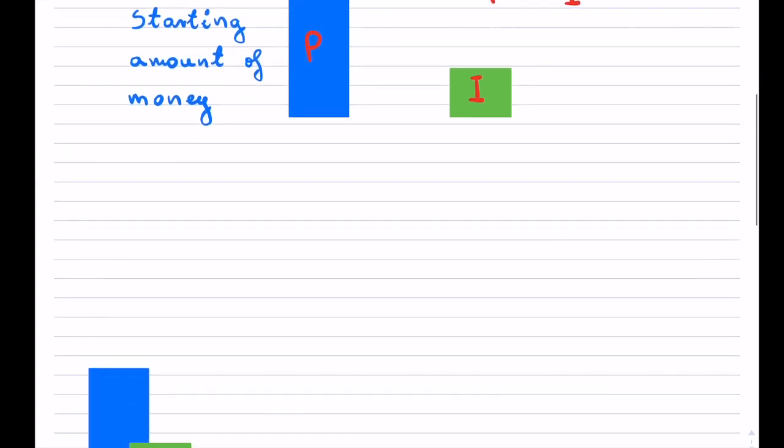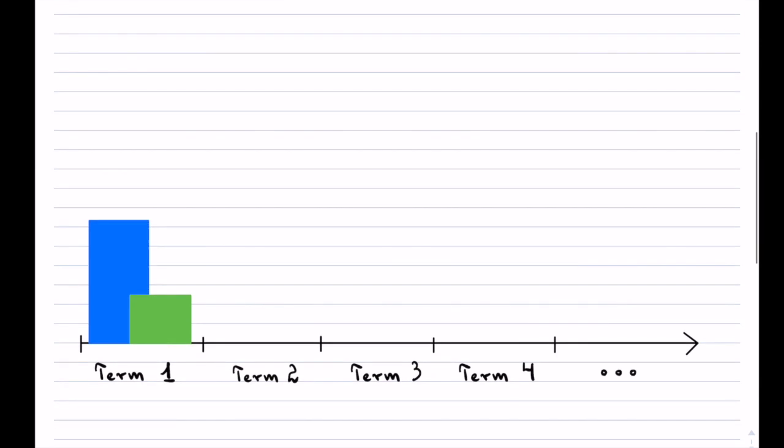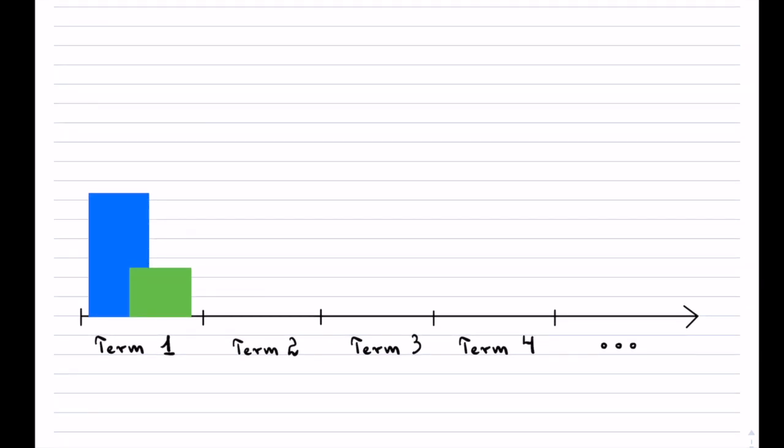So visually, what happens is the following. Imagine that you started with a certain amount of money, that would be the blue that you see. And then for your first term, which is a certain amount of time, it could be a year, it could be a month, it could be a quarter, you're going to make a certain amount of interest, and that's the green.